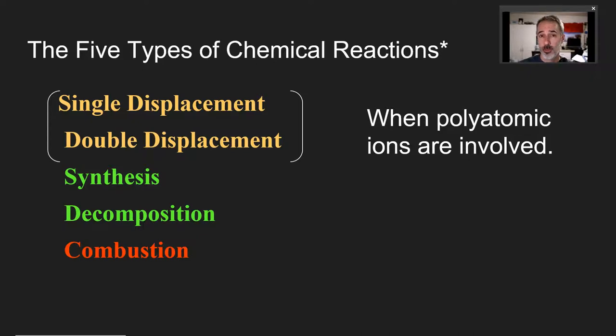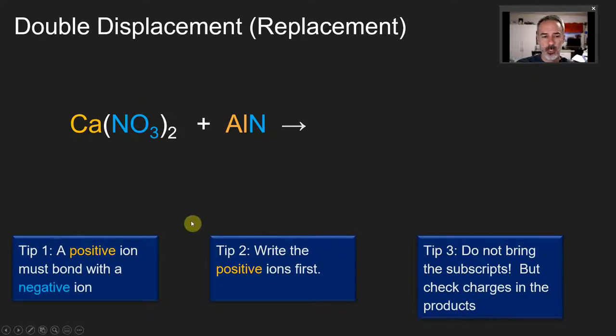Now that we know how double displacement reactions work, that essentially they're like square dancing, molecular square dancing where the ions swap partners, in this lesson we're going to look at a slightly more complex version: what do you do if polyatomic ions are involved? Well, the answer is really nothing new, just swap the ions. But of course, the hard part is knowing what subscripts to keep and which ones to get rid of.